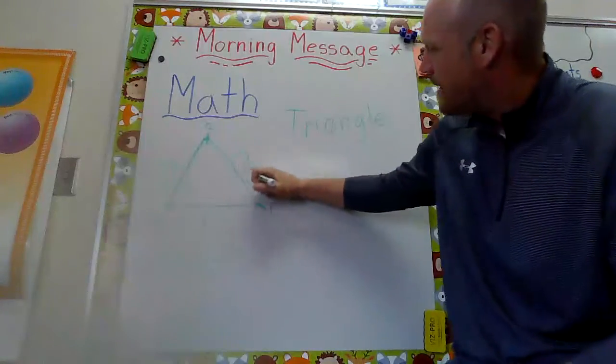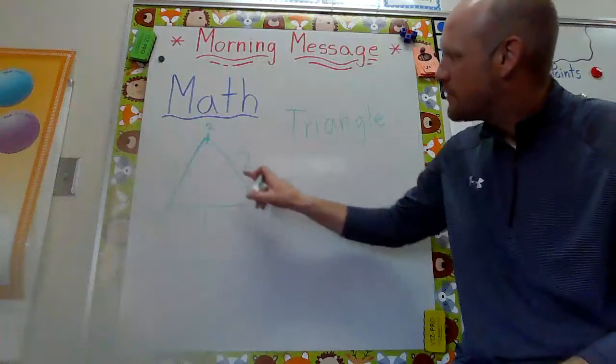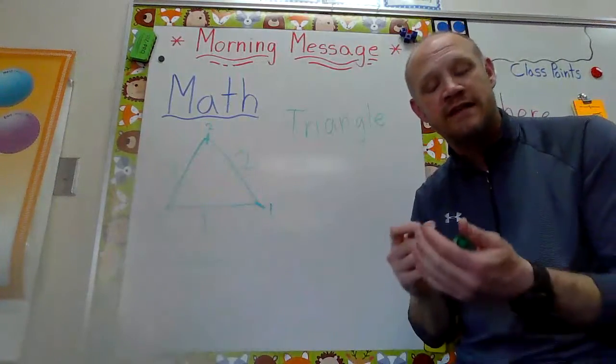So your triangle has three straight sides, three corners where your straight sides meet.